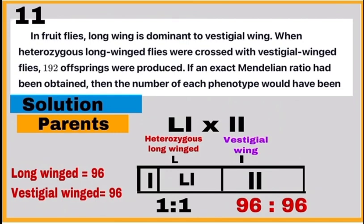Question 11 is based on test cross, where heterozygous long-winged flies were crossed with vestigial-winged flies. As a result, the ratio obtained is 1:1. So out of 192 offspring, 96 will be heterozygous long-winged flies and 96 will be vestigial-winged flies.